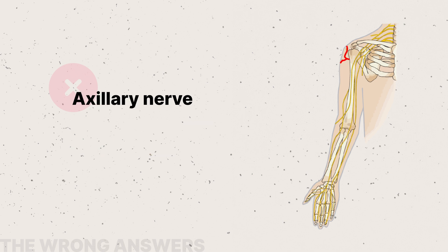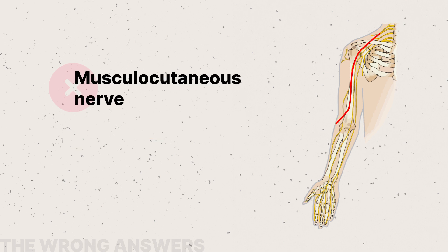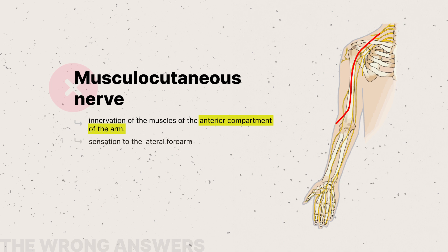The axillary nerve innervates the deltoid and teres minor muscles and provides sensation over the lateral aspect of the shoulder — it does not contribute to motor hand function. Similarly, the musculocutaneous nerve innervates the muscles in the anterior compartment of the arm and provides sensation over the lateral forearm, and like the axillary nerve, it does not contribute to motor hand function.